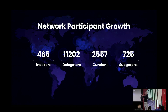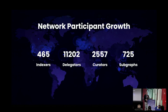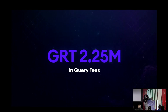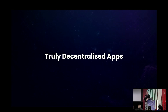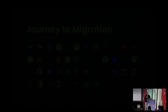As of yesterday when I last updated these numbers, there are 465 indexers and 725 subgraphs on the decentralized network. If you want to deploy your subgraph on the decentralized network, find us at our booth. Since the network launched, there have been 2.25 million GRTs in query fees generated. Teams like Premia, Yearn, Art Blocks, PoolTogether, and NFTX have already migrated — it's really the big initiative now to migrate everything to the decentralized network.